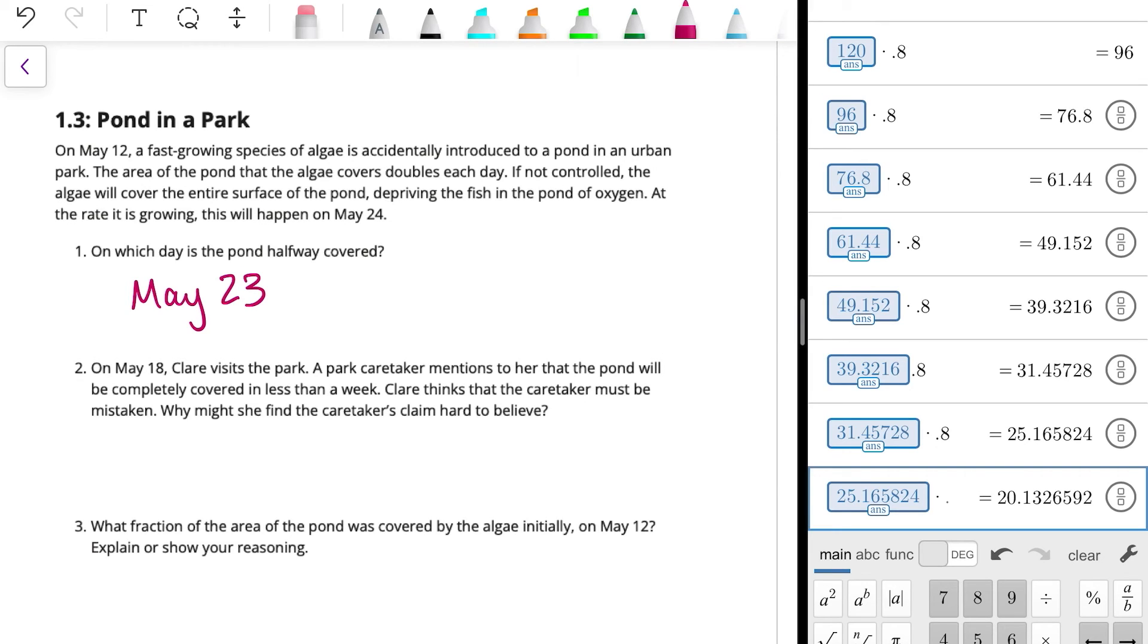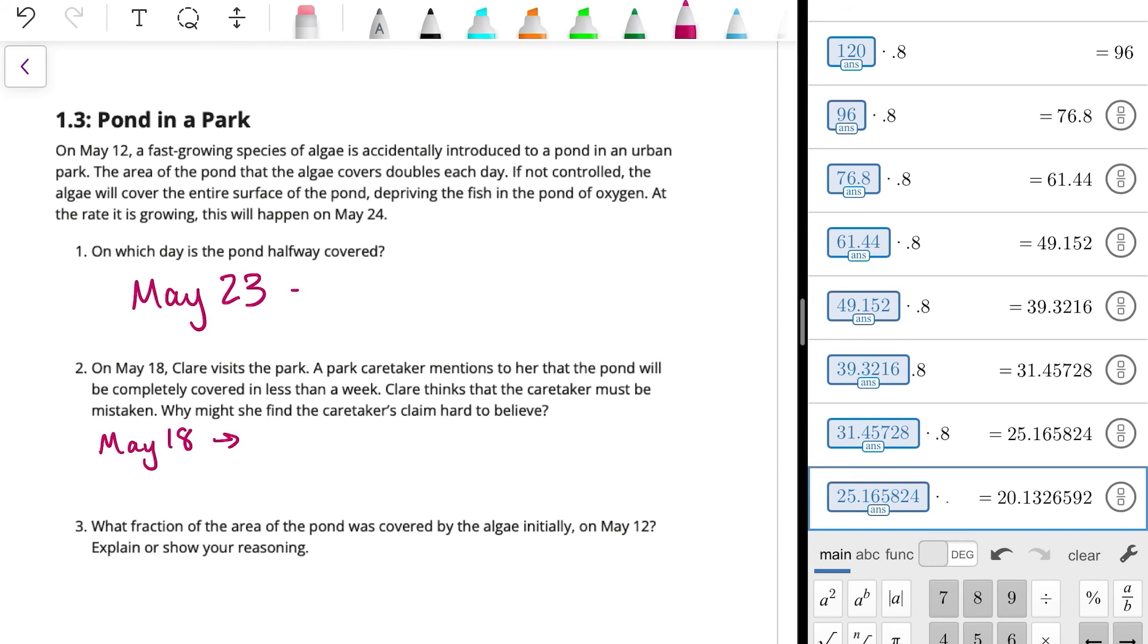On May 18th, Claire visits the park. A park caretaker mentions to her that the pond will be completely covered in less than a week. Claire thinks that the caretaker must be mistaken. Why might she find the caretaker's claim hard to believe? All right. So on May 18th, let's see how much of the pond will be covered. So May 18th. Well, and actually, let's go backwards. So on May 23rd, half the pond, so that was half the pond is covered. So that means on, let's do this.